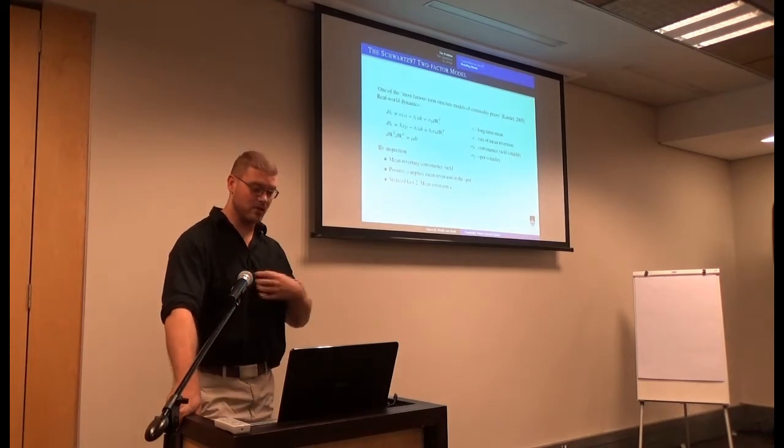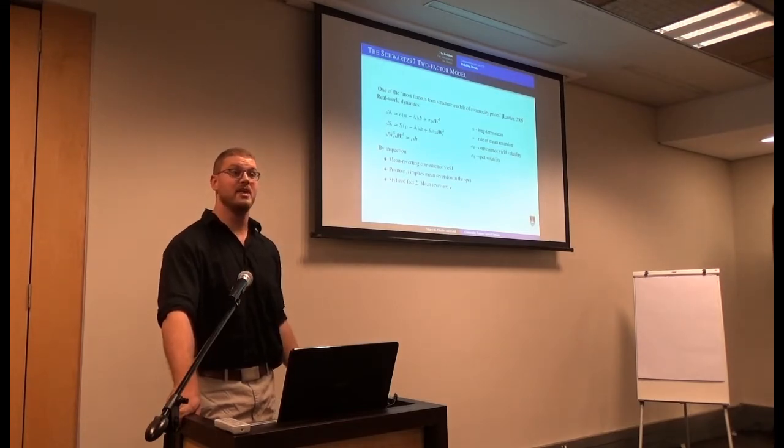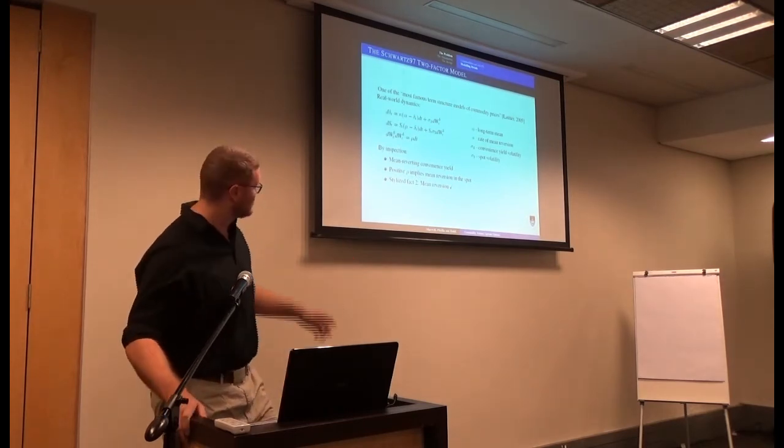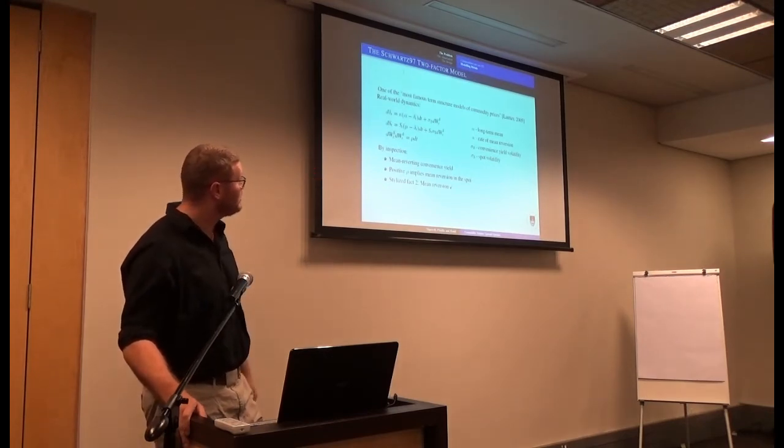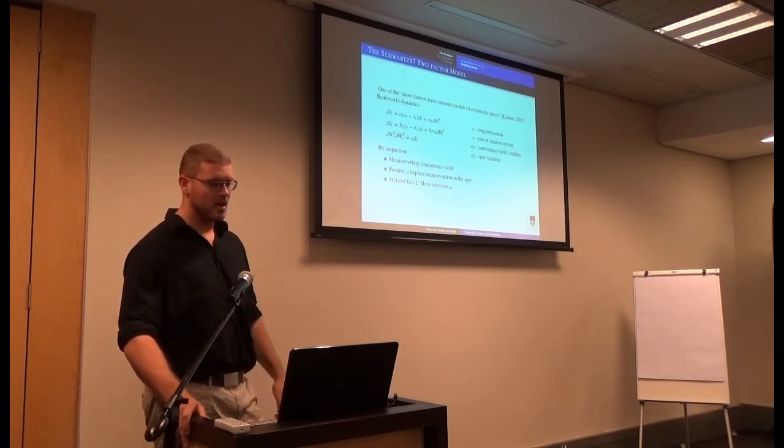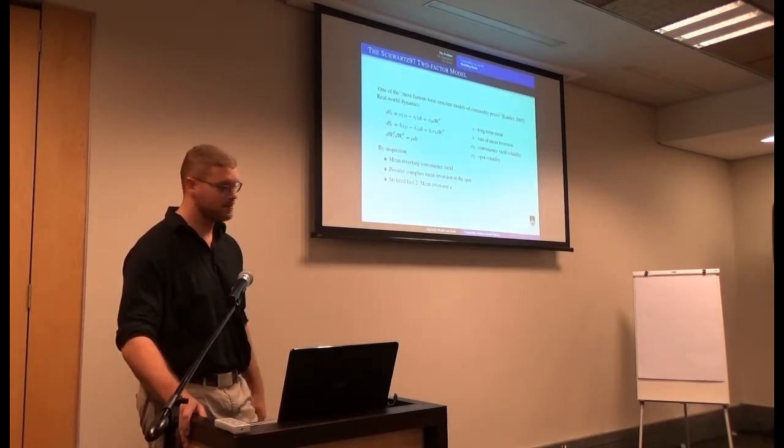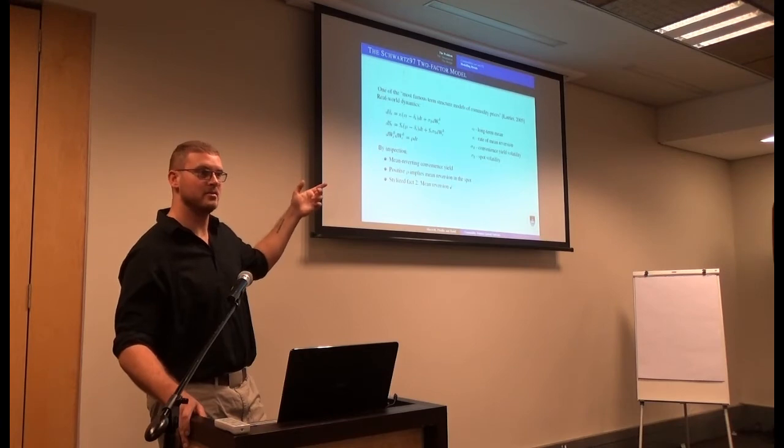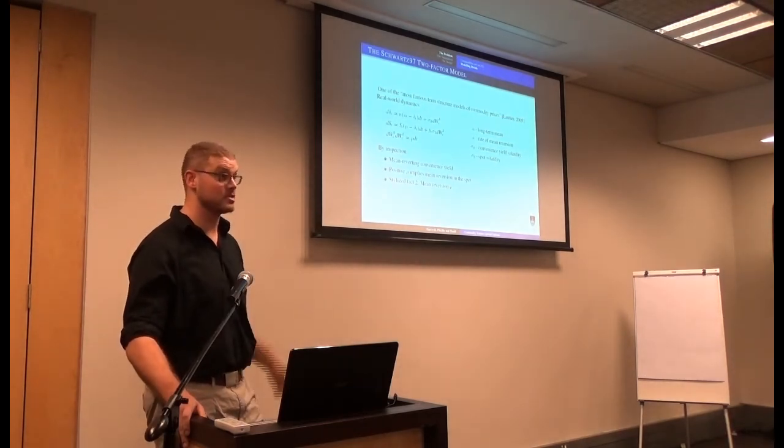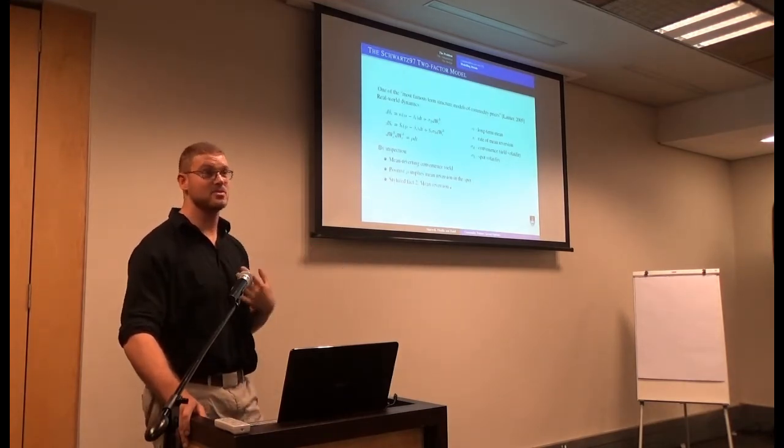Let's look at the Schwartz two-factor. This is the model we selected. One of the most famous term structure models of commodity prices. When you have 10 days to come up with a solution, you kind of want to choose a mainstream solution, because then there's literature surrounding it. The real-world dynamics are straightforward to describe. We have some Ornstein-Uhlenbeck process for the convenience yield, and we have that convenience yield feeding into the drift of the spot price. By inspection, do we gain anything just looking at this model at first glance in terms of what we capture of the market characteristics? So you can see here that if we have a positive correlation between the two Brownian motions that are driving the two processes, because the convenience yield is feeding to the drift in a negative way, we can induce mean reversion in the spot via that positive correlation. So we've captured one of our stylized facts without doing any analysis. We can simply look at the model. This was very encouraging to us.